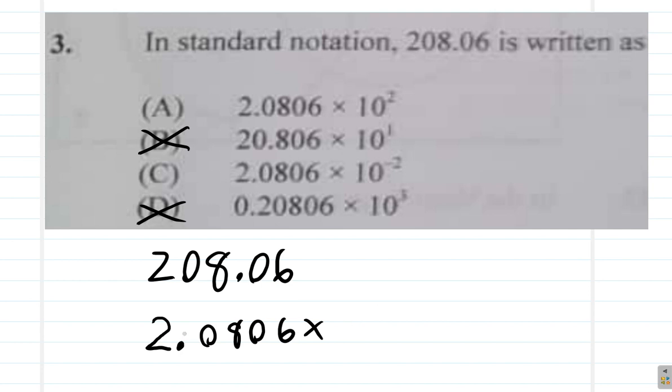You can see, if you want this to become 208.06, you'll have to move the decimal point two places to the right, so you multiply by 100. But of course, when you write it, you have to write it as 10 to a power, so it is 10 squared. So, in this case now,